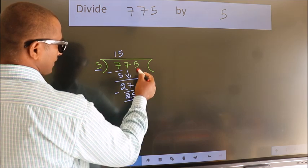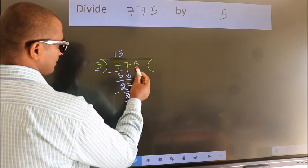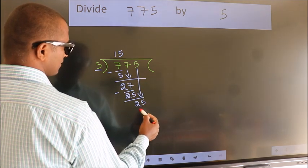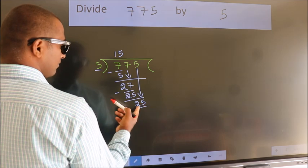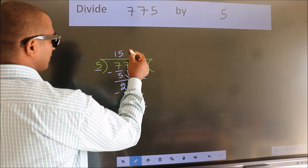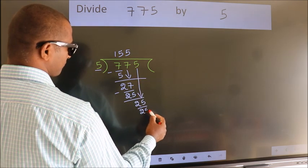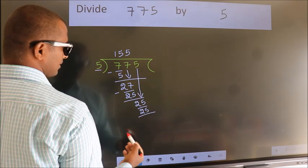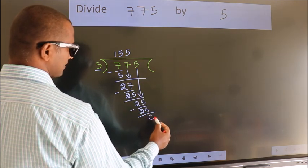After this, bring down the beside number. So, 5 down. So, 25. When do we get 25? In 5 table. 5 5s 25. Now, we subtract. We get 0.